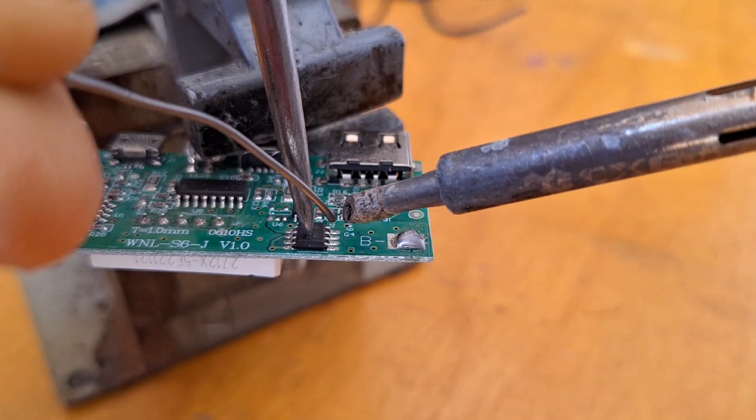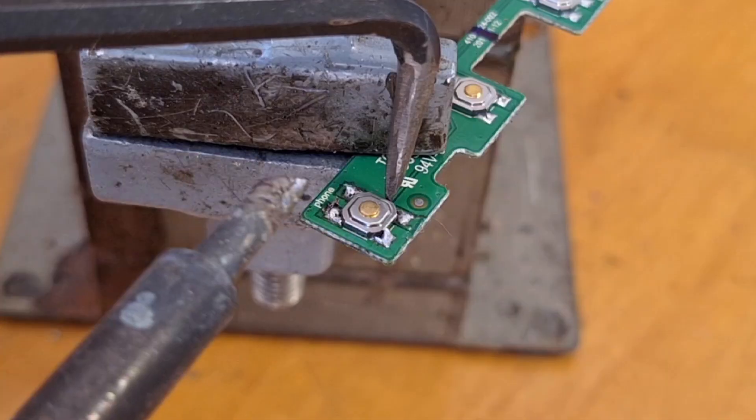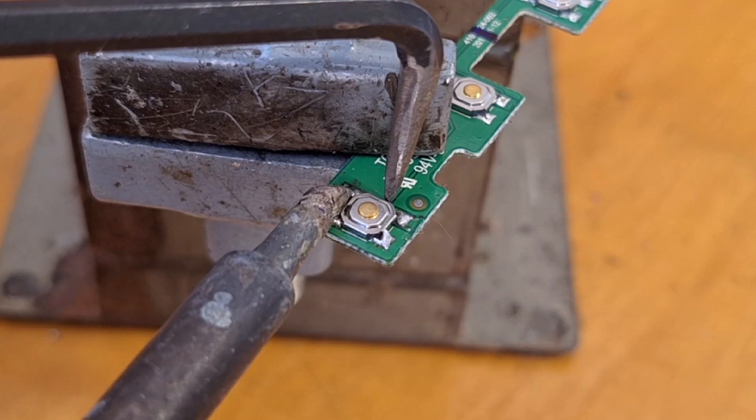The ice pick is useful for electronics work as well. I use it to hold components in place while soldering, to flick away components while desoldering.